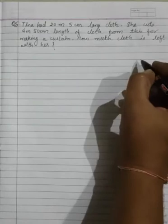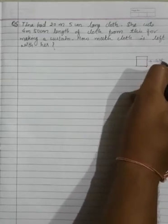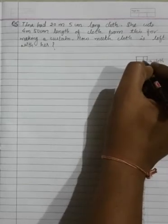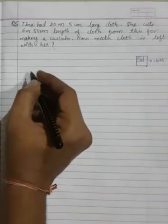So the pictorial representation will be this was the cloth Tina was having and some part of the cloth from this cloth is being cut by Tina for making the curtain. So let's solve.